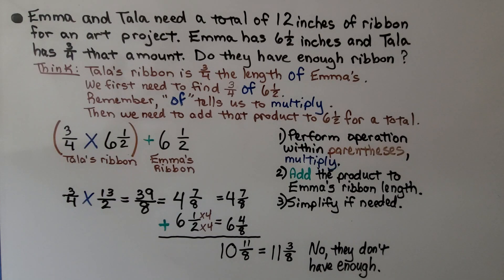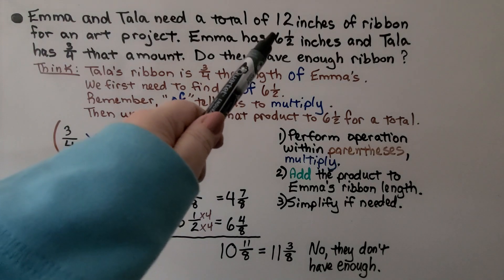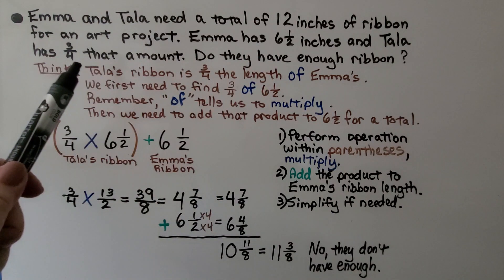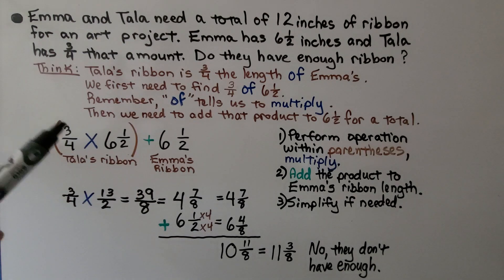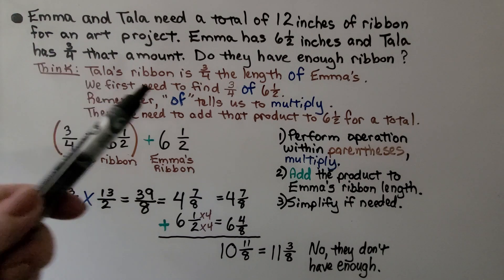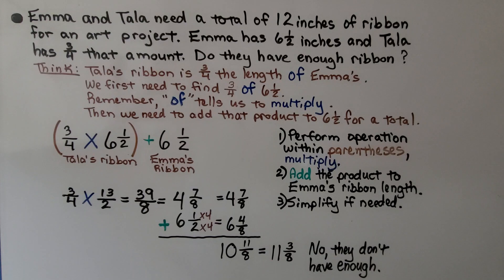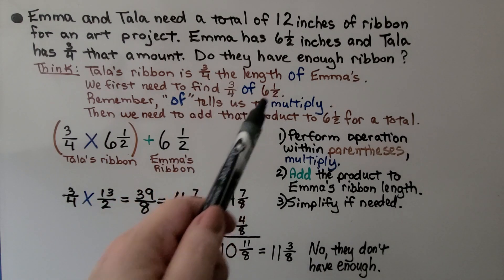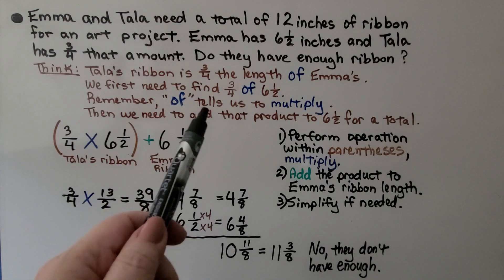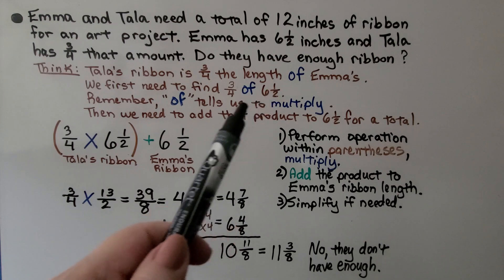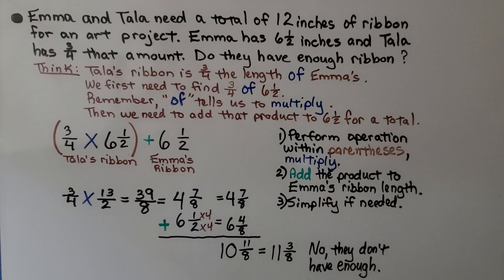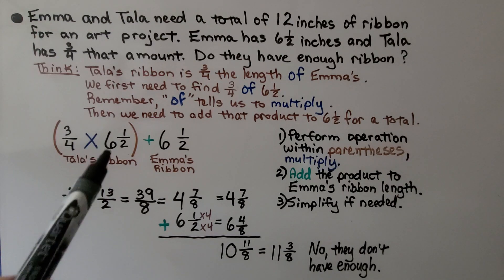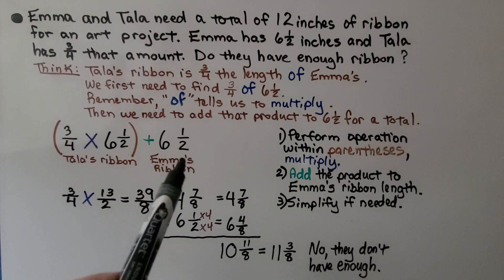Here's our last word problem: Emma and Tala need a total of 12 inches of ribbon for an art project. Emma has six and a half inches and Tala has three fourths of that amount. Do they have enough? Tala's ribbon is three fourths the length of Emma's, so first we find three fourths of six and a half — and remember, 'of' tells us to multiply. Three fourths times six and a half gives us Tala's length; then we add that product to six and a half for the total.